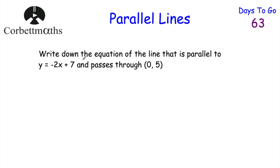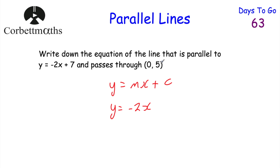The next question says: write down the equation of a line that's parallel to y equals minus 2x plus 7 and passes through the point (0, 5). The point (0, 5) is the y-intercept — it's 5 on the y-axis. The equation will be in the form y equals mx plus c, and since it's parallel the gradient must be minus 2. It crosses through 5 on the y-axis, so the equation is y equals minus 2x plus 5.